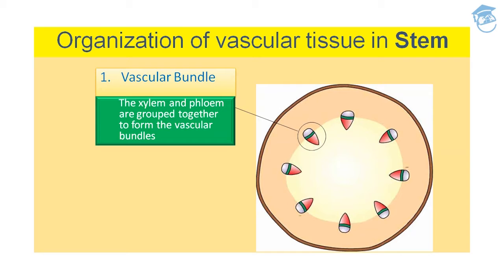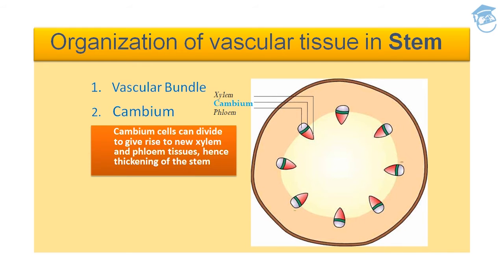Now, the organization of vascular tissue in a stem: first is the vascular bundle, wherein xylem and phloem are grouped together to form the vascular bundle. This is one entity where xylem and phloem are grouped together, along with the cambium.